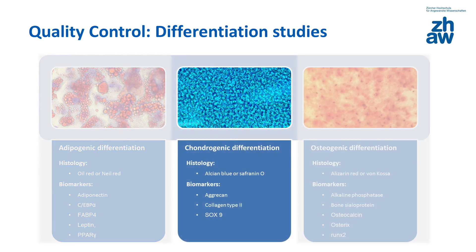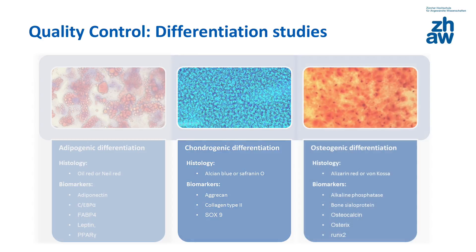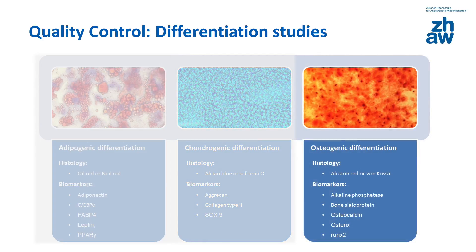For chondrogenic differentiation, chondrocytes can be stained with Alcian Blue or Safranin O. A very commonly used biomarker for chondrocytes is the analysis of collagen type II. For the staining of osteocytes, Alizarin Red or von Kossa are commonly used histochemical methods.